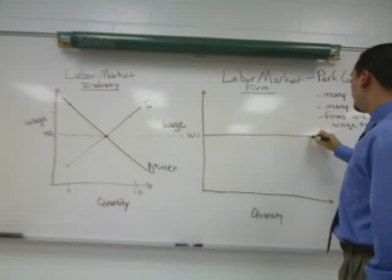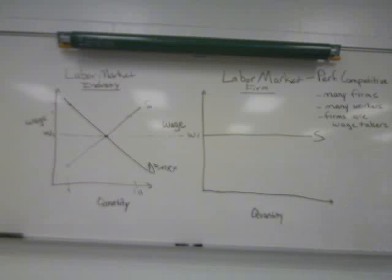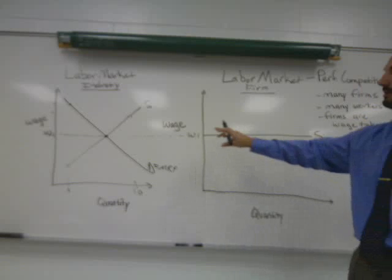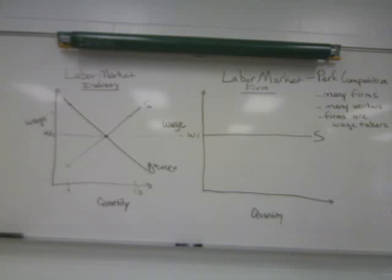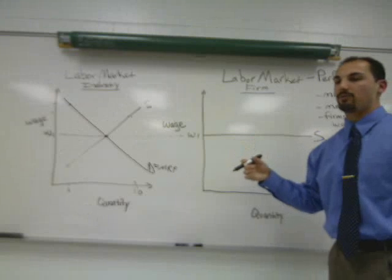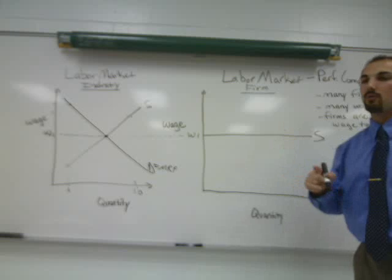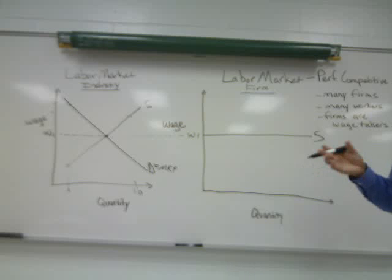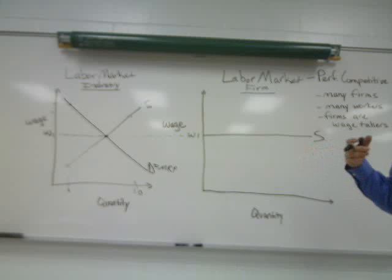The supply curve that the firm faces is going to be perfectly elastic, because the firm faces a supply of labor that must be paid this equilibrium market wage. Anything less than this, and nobody would work here — there are plenty of job opportunities elsewhere with many firms willing to pay the equilibrium wage. Anything above the equilibrium wage would be a net loss for the company — an unsustainable wage that would make costs greater than every competing firm in the industry, and the firm would eventually go out of business.